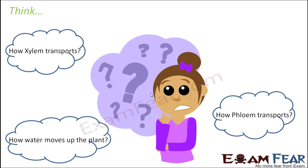The next question is: we know that xylem transports from bottom to top and phloem transports in both directions, but how exactly does xylem transport? How is it possible that water and minerals start moving upward against gravity? Till now we all knew that everything tends to fall towards the ground due to Earth's gravity.